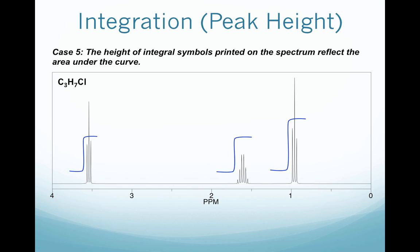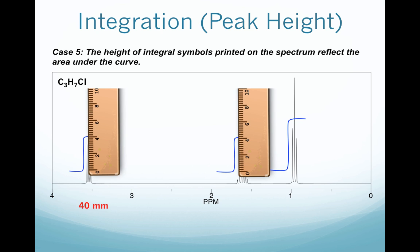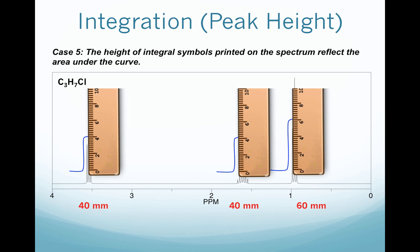To be more exact, you can take a ruler and measure the height of each integral. The first has a height of about 40 mm, the next also about 40 mm, and the final integral has a height of 60 mm. Using these heights as area values, we get a peak ratio of 1 to 1 to 1.5 by dividing by 40. Multiplying by 2 gives a final ratio of 2 to 2 to 3, giving us the integrations for each signal.